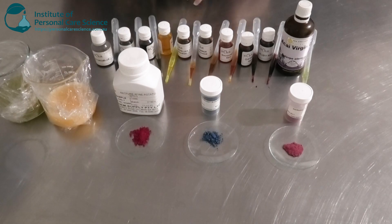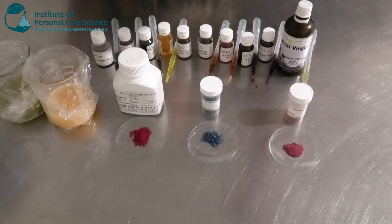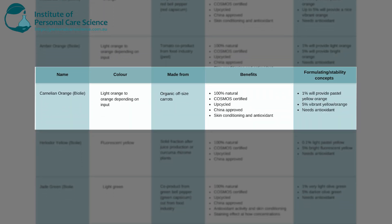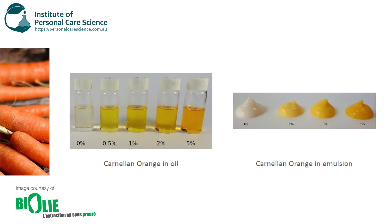My next one is another orange — the Carnelian Orange, also by Biola — which provides a light orange to orange depending on input. This is made from organic off-size carrots and is also 100% natural, Cosmos certified, upcycled, China approved, and has skin conditioning and moisturization benefits. Again, you will need to use more to get a more solid color: 1% provides a pastel yellow-orange, and 5% provides a vibrant yellow-orange color in emulsions.